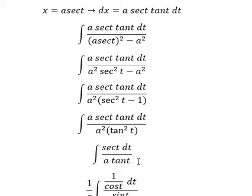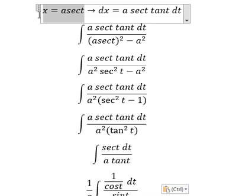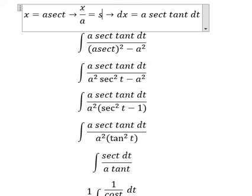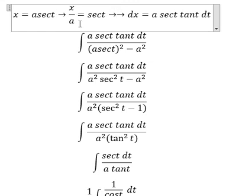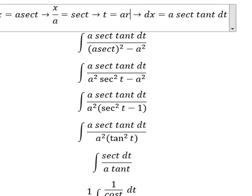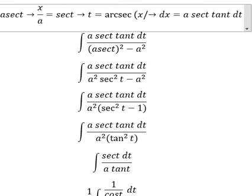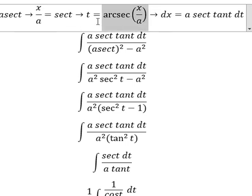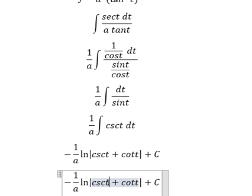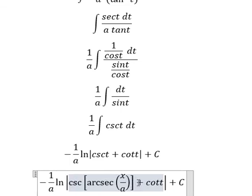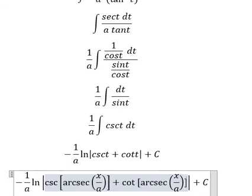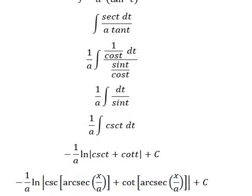For t, we divide both sides by a, and we get t equal to arcsec of x over a. So we substitute this to replace t. This is the final answer.